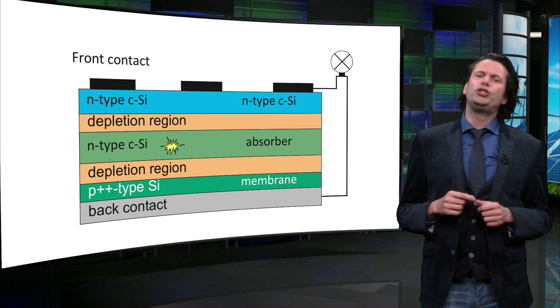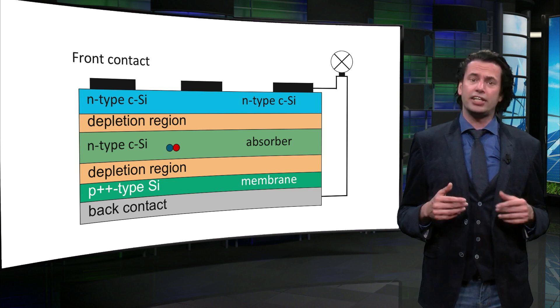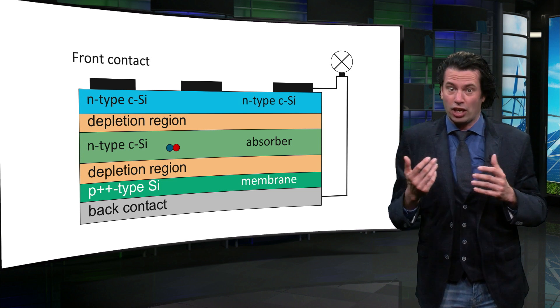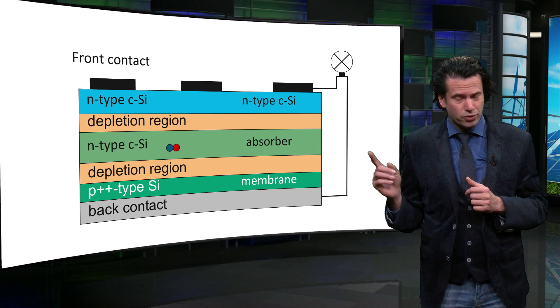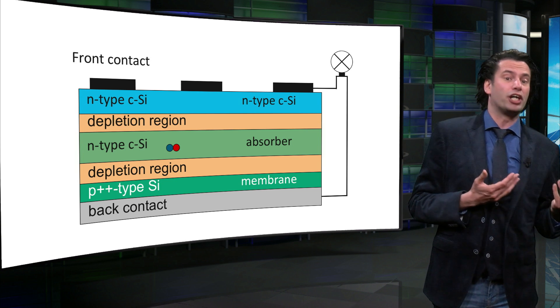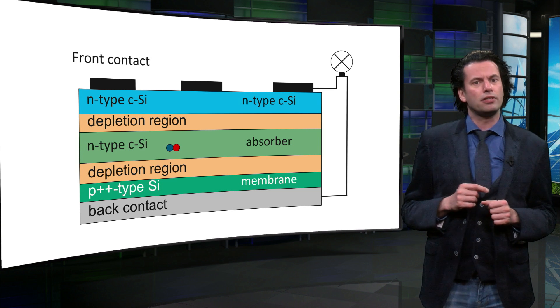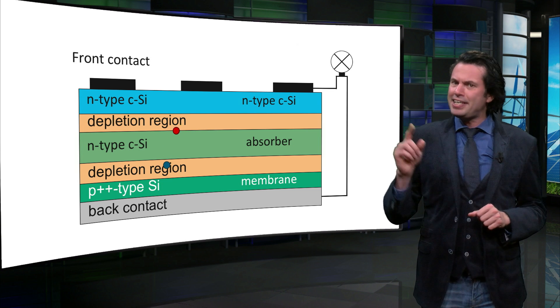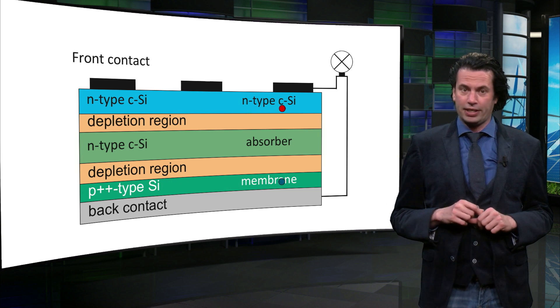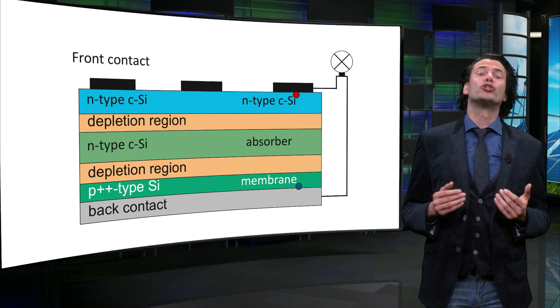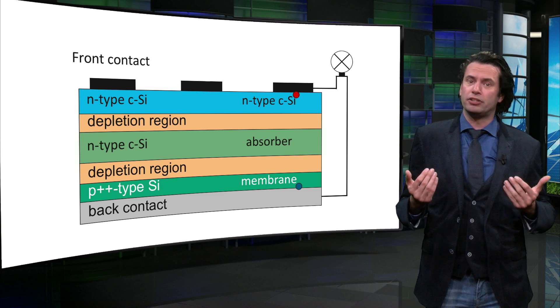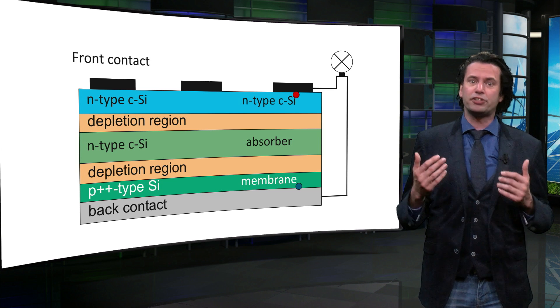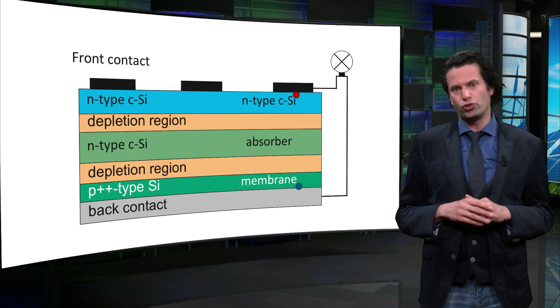The energy is used to excite charge carriers in the semiconductor material, which are a negatively charged electron, indicated by the red dot, and a positively charged hole, indicated by the blue dot. These charge carriers diffuse and need to be separated. This separation occurs at the depletion region between the N and the P type doped silicon, and the depletion region at the back of the solar cell.